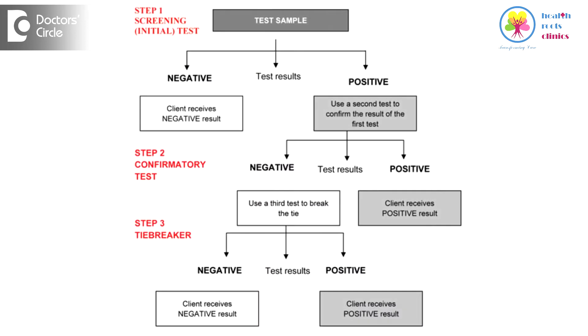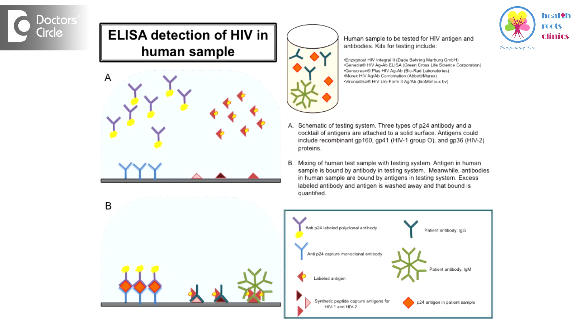Basically, there are three types of tests that we use to detect HIV, a diagnosis of HIV infection. The most commonly used tests, which are used as screening tests, are tests that detect antibodies that our body has made after exposure to the HIV virus. These are tests such as the ELISA test or the ELFA test and other tests.